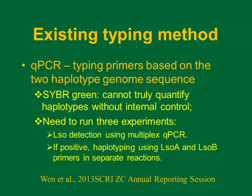Without an internal control, you cannot actually quantify. Also, when you have samples, we normally first detect whether it's LSO positive using the multiplex qPCR, and if they are positive, then we run the haplotype-specific primers in separate reactions. So it turns out that if you have one positive sample, you do three runs. If you have a lot of samples — like Rachel reported this morning, we've run 20,000 — and when you do replicates in triplicate, even though SYBR Green is cheaper, you end up with a much higher cost.